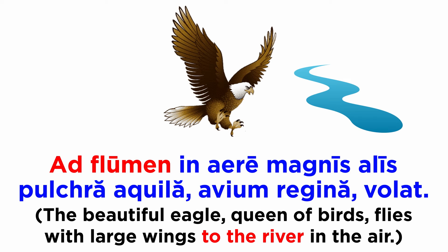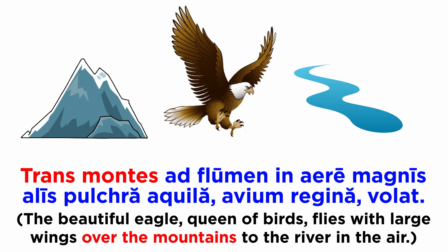Let's add a place as well: 'Ad flumen, in aere, magnis alis pulchra aquila avium regina volat' — 'The beautiful eagle, queen of birds, flies with large wings to the river in the air.' And just one more detail: 'Trans montes, ad flumen, in aere, magnis alis pulchra aquila avium regina volat' — 'The beautiful eagle, queen of birds, flies with large wings over the mountains to the river in the air.'